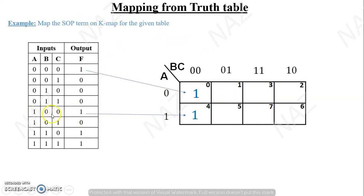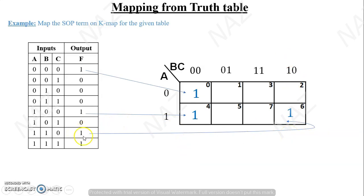Next, my row is 1, 0, 0. A is 1, B and C is 0, 0. This position of the cell is found, and its output is 1, so I plot 1 here. Next, A=1, B=1, C=0 — I plot 1 here, and its output is 1. Then the last output is also 1: A is 1, B and C is 1, 1 — so I plot 1 here as well.